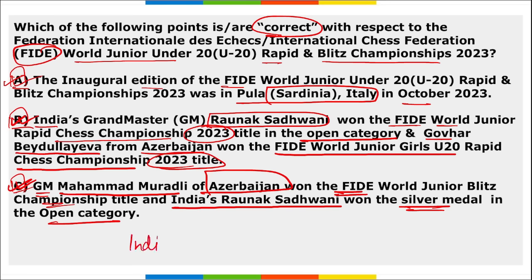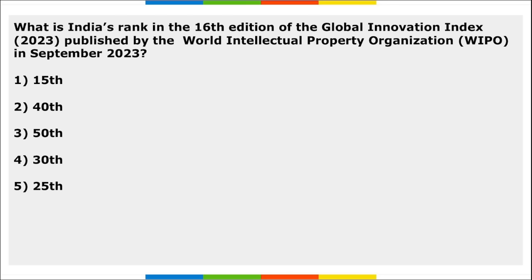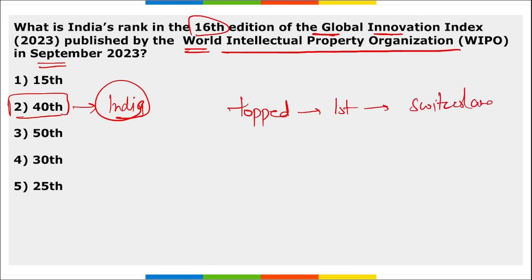Udaipur became India's first wetland city. Regarding the 16th edition of the Global Innovation Index published by WIPO in September 2023, India's rank is 40. The top position was secured by Switzerland, followed by Sweden in second place and USA in third.